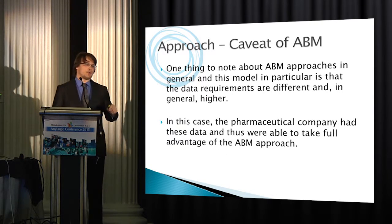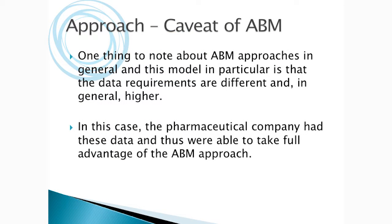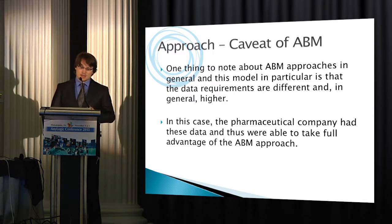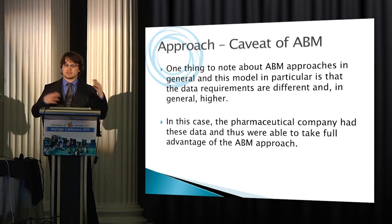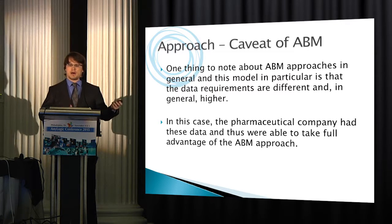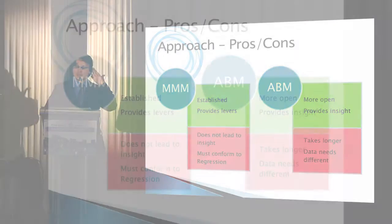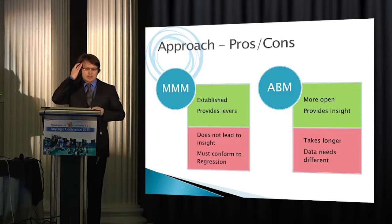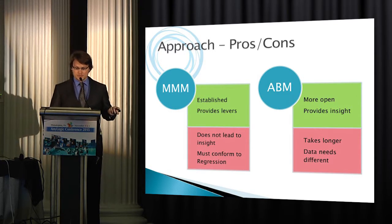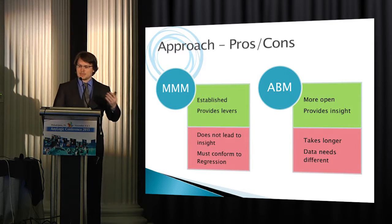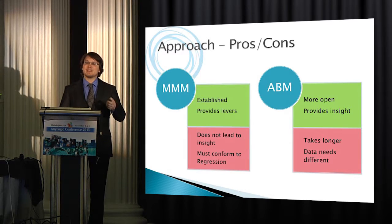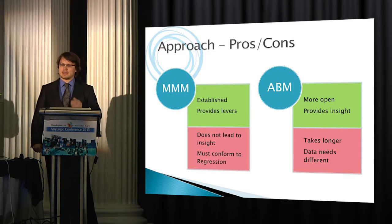One thing to know about ABM compared to market mix modeling is that it requires almost a completely different set of data than traditional market mix models. There are some data dependencies here, although in this case the company had this data. In conclusion about pros and cons: market mix models are very established, and all marketing analytics people understand them. They provide levers — you can change spending levels and figure out the difference in market share. The real drawback is they don't lead to insight; they just give an answer, and they must conform to regression assumptions. ABM is much more open, provides insight into the process, but generally takes longer to build initially and has different data needs.